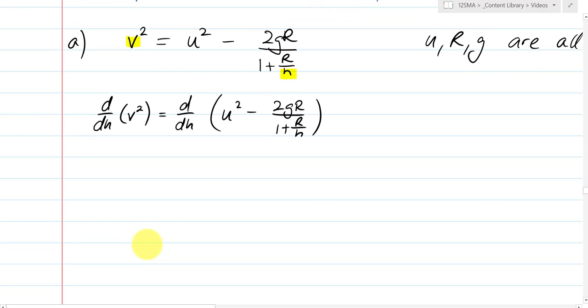Deriving v squared where v is a function of h, I get 2v times by dvdh. The derivative of the inside which is dvdh. And this is what I'm trying to solve for. Over here ddh of u squared. u squared is just a constant. Of course this is also just a constant. So I'm going to take that out as a constant. I get negative 2gr. And then I've got ddh of this thing on the inside, which I'm going to write as 1 plus r over h to the power of negative 1.